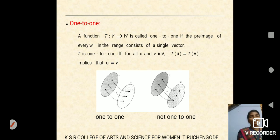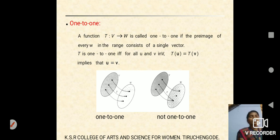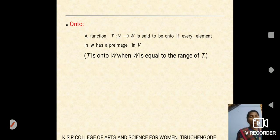Definition of onto: the function T from vector space V into W is called one-to-one if the pre-image of every element in the range consists of a single vector. T is one-to-one if and only if for all U and V in vector space V, T(U) = T(V) implies U = V. Alternatively, T(U) ≠ T(V) implies U ≠ V. Onto means the range set and co-domain set are equal. The function T mapping from V to W is onto if every element in W has a pre-image in V.